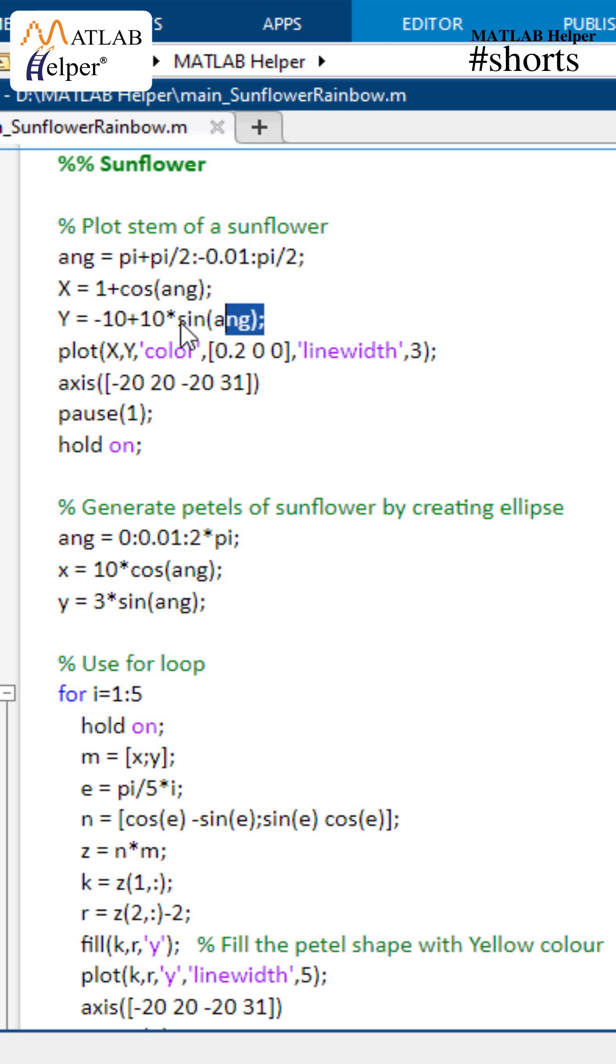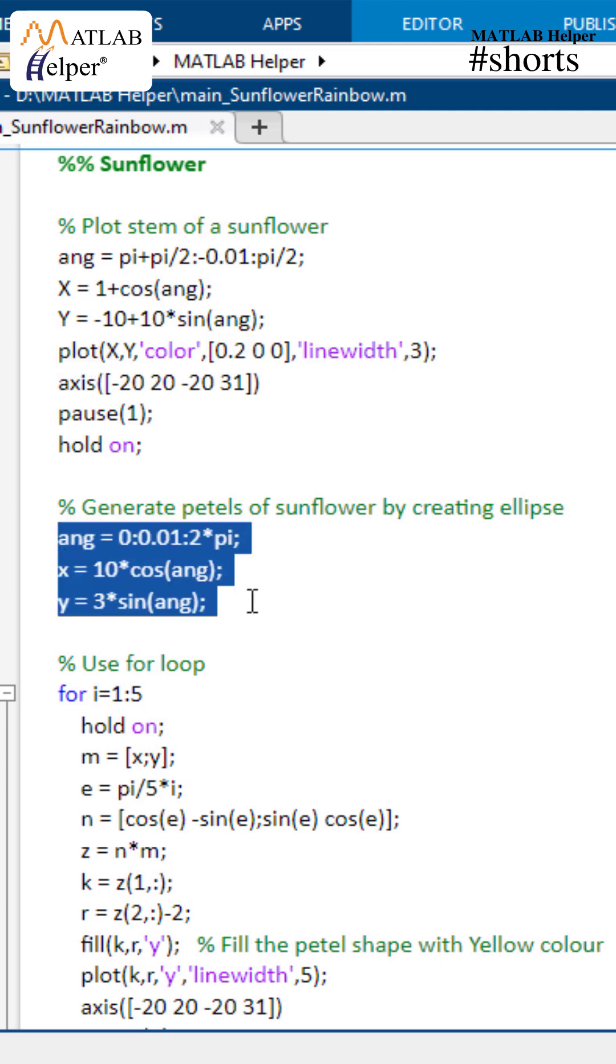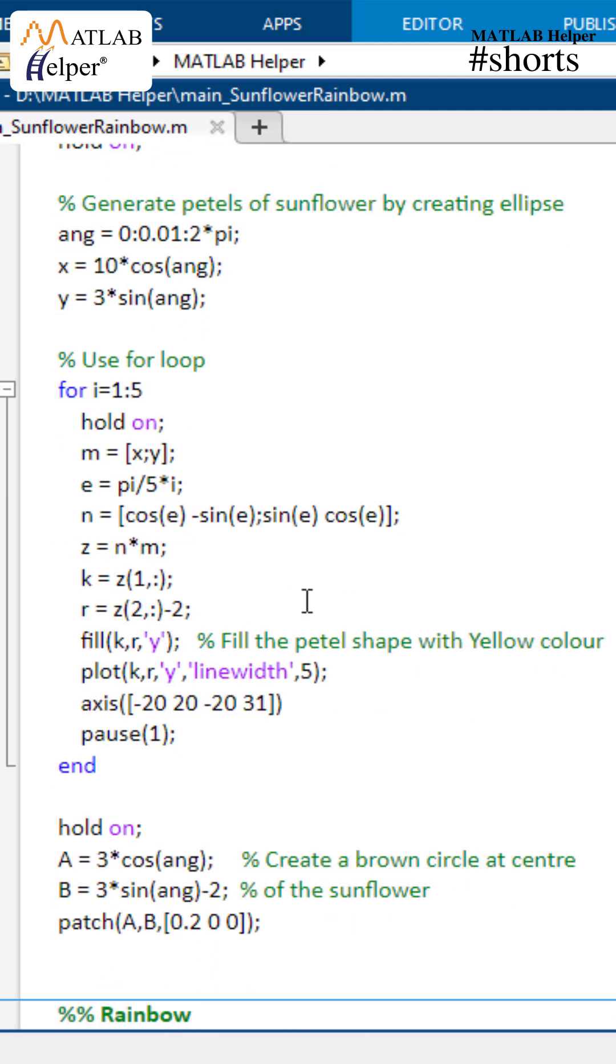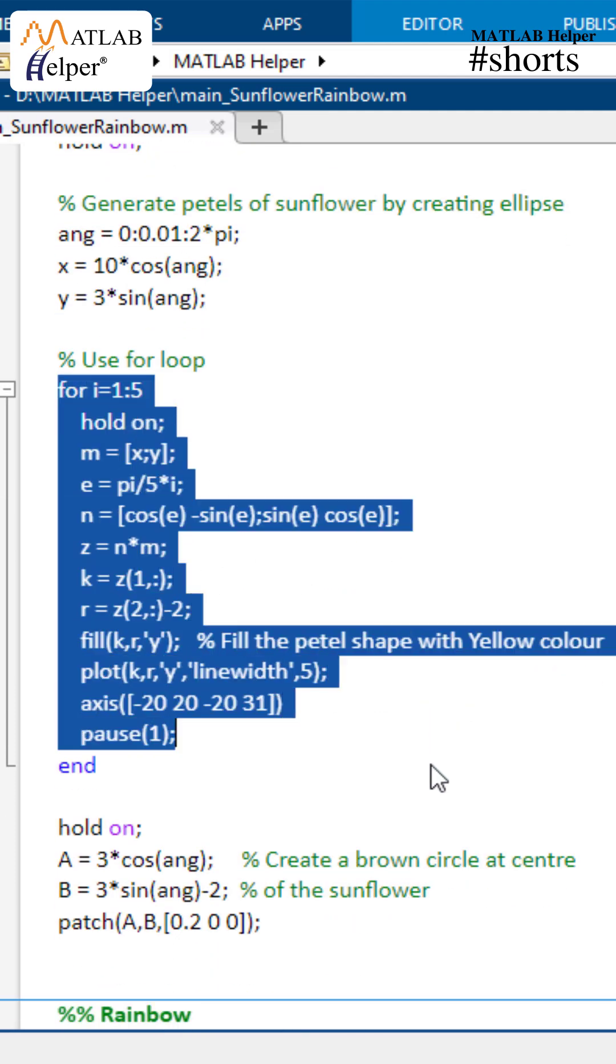For this, we will use these two mathematical equations along with this plot command. We will use these mathematical equations and generate an elliptical shape. Then using a for loop, we will create five petals simultaneously. On execution of each loop, the fill command fills the yellow color in the ellipse.